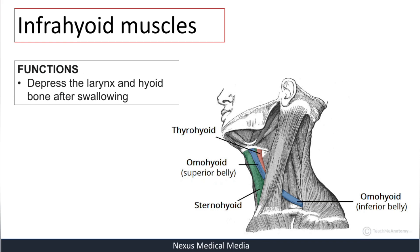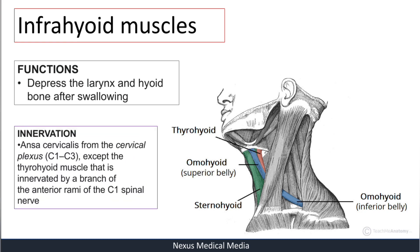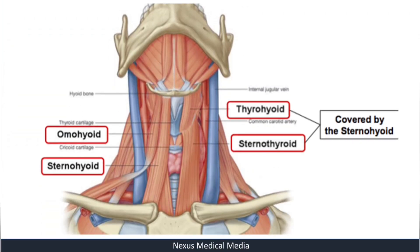Regarding innervation, these muscles are innervated by the ansa cervicalis from the cervical plexus C1 to C3, except the thyrohyoid muscle, which is innervated by the branch of the anterior ramus of the C1 spinal nerve. So the thyrohyoid is innervated by the anterior ramus of C1, while the rest of the infrahyoid muscles are innervated by the ansa cervicalis C1 to C3.